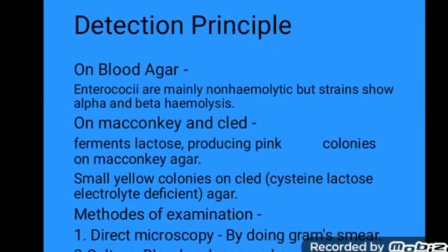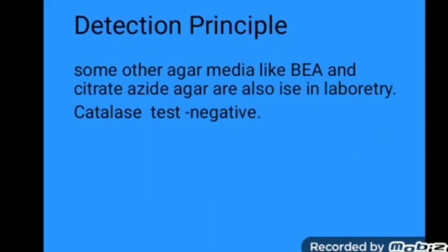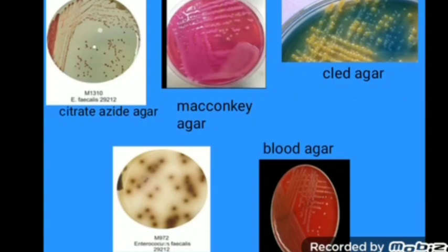Laboratory methods of detection: 1. Direct Microscopy — a Gram smear is performed. 2. Culture — blood agar and MacConkey agar are used. Other agar media such as BEA (Bile Esculin Azide) agar and citrate azide agar are also used in laboratories. The catalase test for Enterococci is negative. Different colony formations are observed in different media: CLED agar shows small yellow colonies; blood agar shows red colonies; BEA and MacConkey agar show pink colonies.